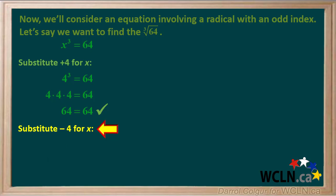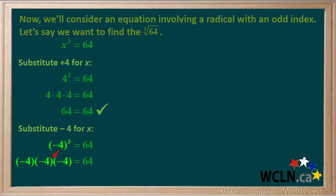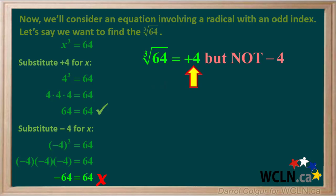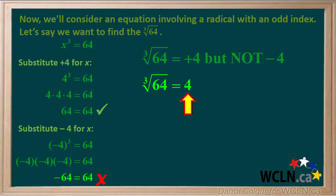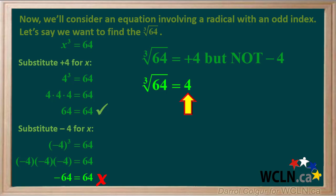Now substituting negative 4: negative 4 cubed is negative 4 times negative 4 times negative 4. Negative 4 times negative 4 is positive 16, and positive 16 times negative 4 is negative 64. Negative 64 is not equal to 64, so this is incorrect. So the cube root of 64 is positive 4, but not negative 4 — there is only one correct solution.